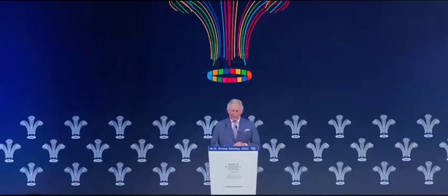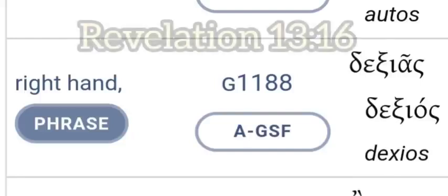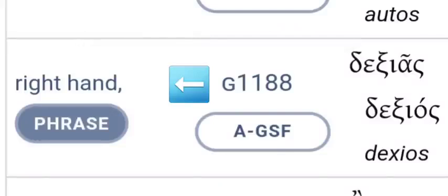Okay, what does 1,188 mean in Strong's Greek? I mean, that's pretty interesting, it means right hand. Okay, it means right hand, and what do we read in Revelation 13, verse 16, he causes all, both small and great, rich and poor, free and slave, to receive a mark on the right hand, or on the forehead.